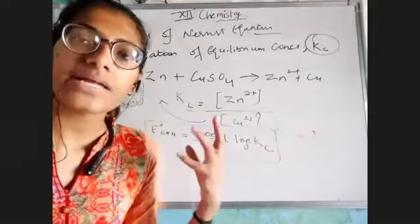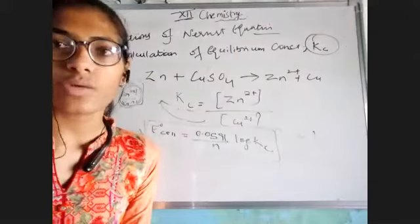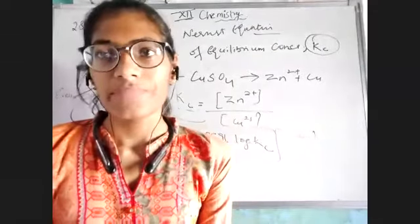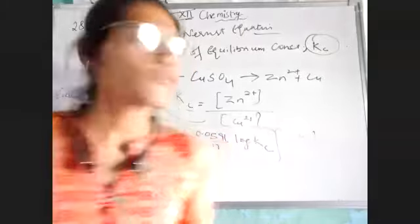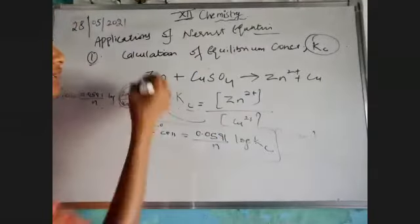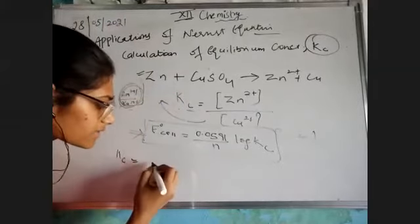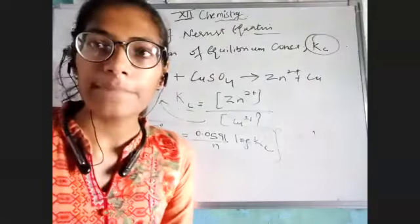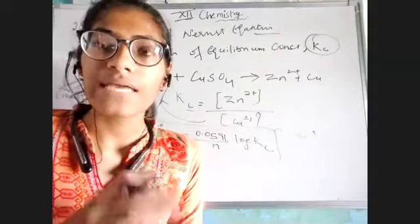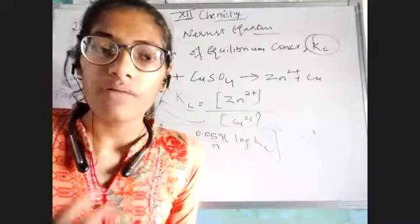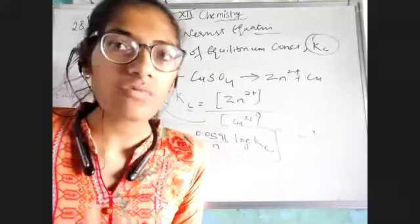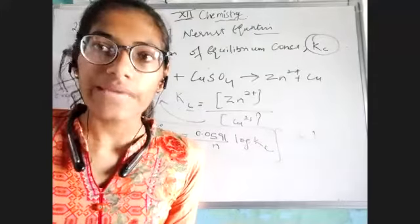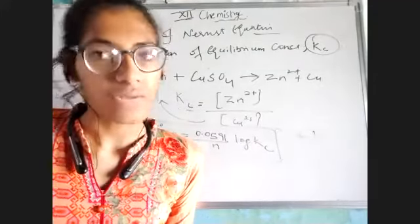This is how we can calculate the equilibrium constant with the help of the Nernst equation. Now the question is, what is the physical significance of calculating the equilibrium constant? If we calculate the Kc value and it is very high — say, almost 10³ — the reaction is almost completed. So with the help of the equilibrium constant, we can calculate how much extent of reaction has been completed.